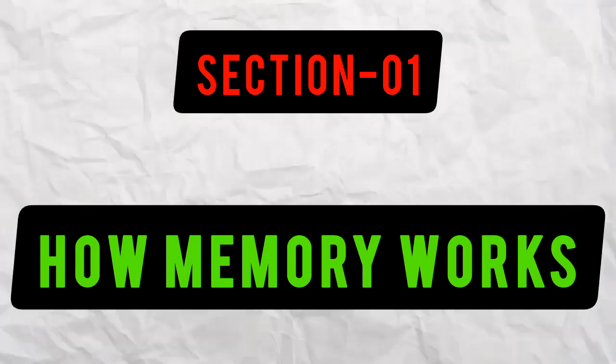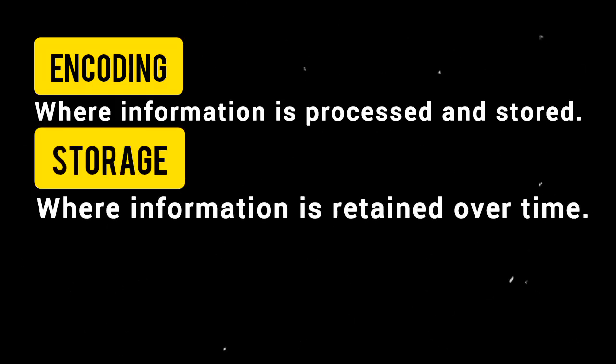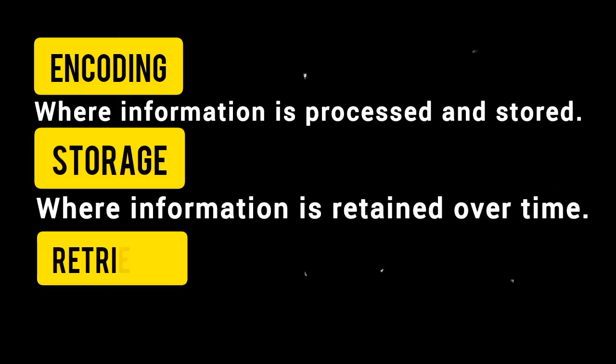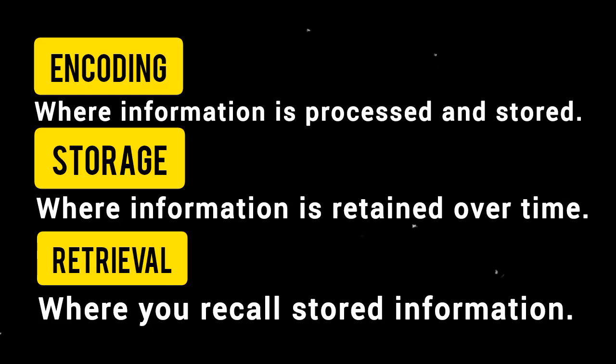This four-minute video is divided into four sections in which you will learn all about long-term memory. Section one: how memory works. Before we jump into boosting your memory, let's understand how it works. Memory is not just a single process. It involves three main stages: encoding, where information is processed and stored; storage, where information is retained over time; and retrieval, where you recall stored information. Each stage is crucial, and optimizing them can significantly enhance your memory abilities.